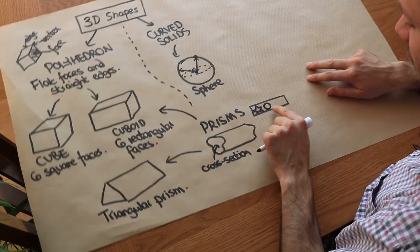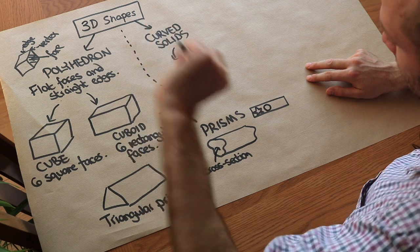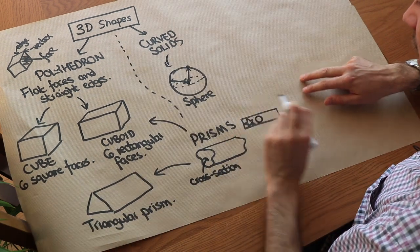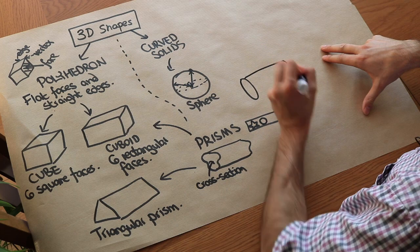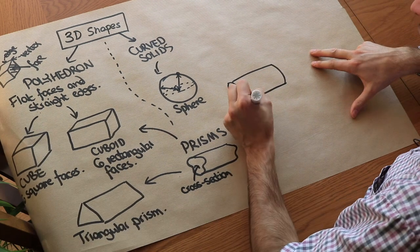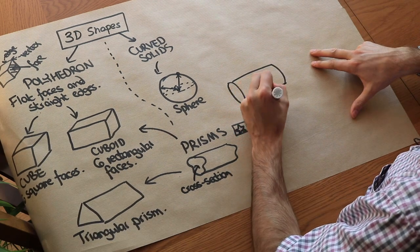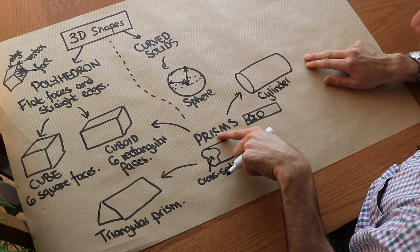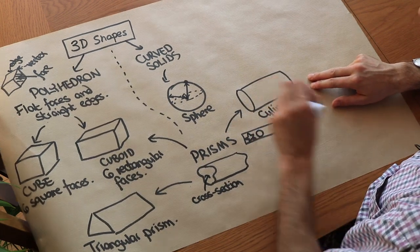If the shape that we're forcing the play-doh through is a circle we'd end up with a shape looking like this. And that is known as a cylinder. So a cylinder is just a prism where the cross section is a circle.